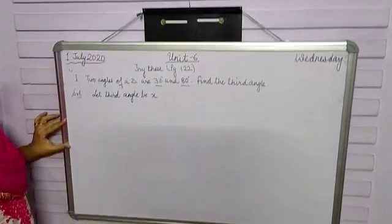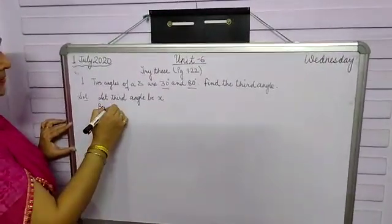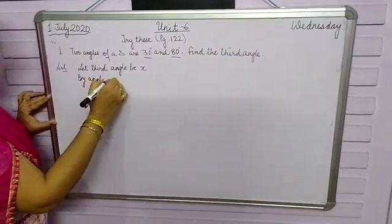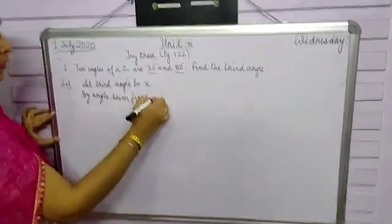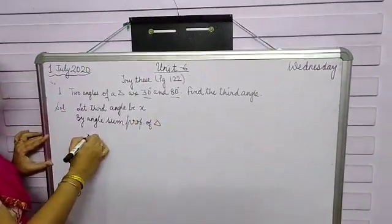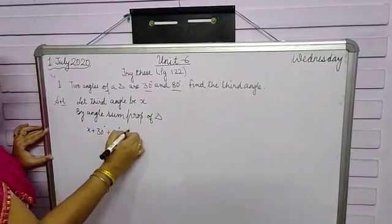Again, two angles of the triangle are given and we have to find out the third angle, so we will use angle sum property. Let the third angle be x. Now by angle sum property of triangle, x plus 30 degrees plus 80 degrees is equal to 180.